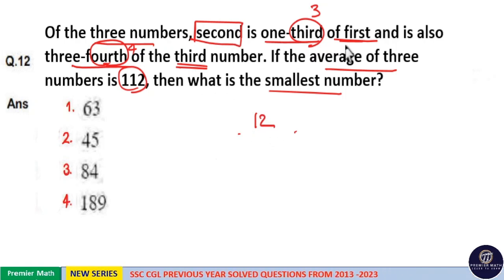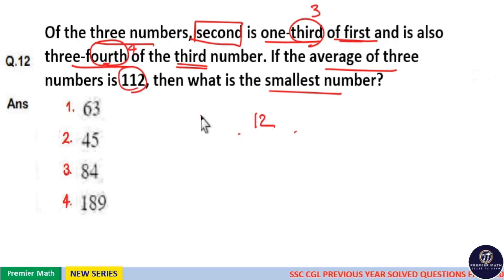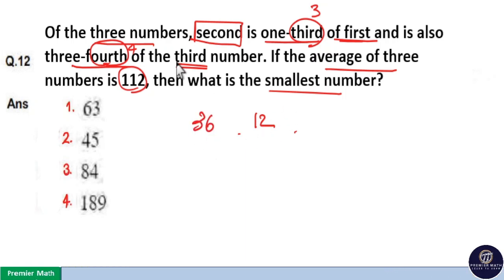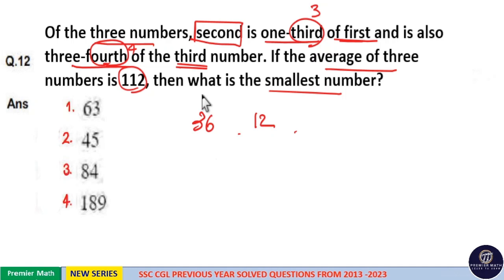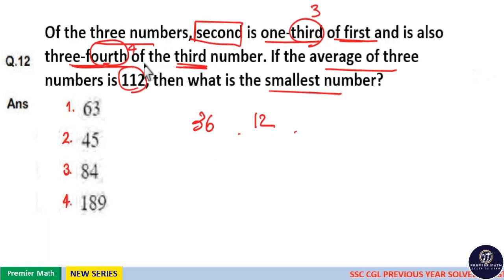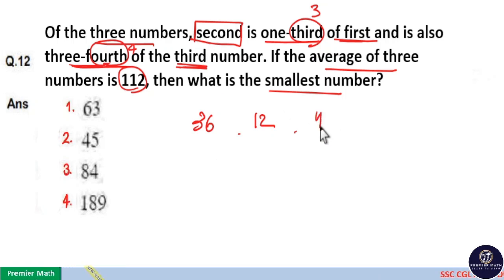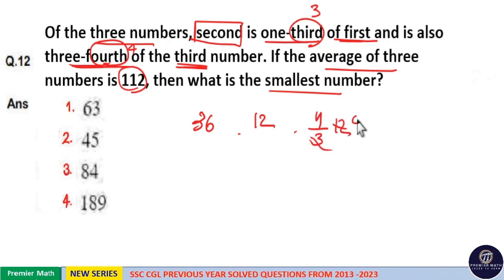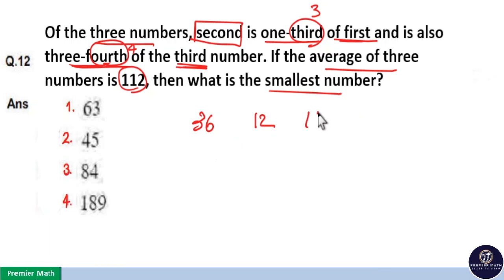Second is one third of first, meaning the first number is three times the second, that is three into twelve equals thirty-six. The third number is four thirds of the second number, because second is three fourths of third. Three fourths of third means third is four thirds of second. Now three goes four times into twelve, so four into four is sixteen — that is the third number.